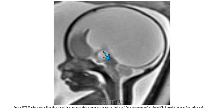This is the sagittal T2 MRI of a fetus at 25 gestational weeks. Aqueductal stenosis is causing lateral and supratentorial ventriculomegaly. There is no CSF in the cerebral aqueduct.